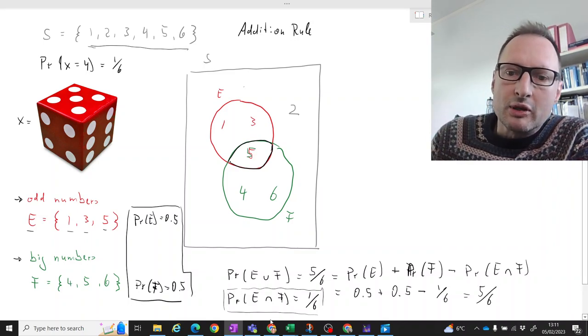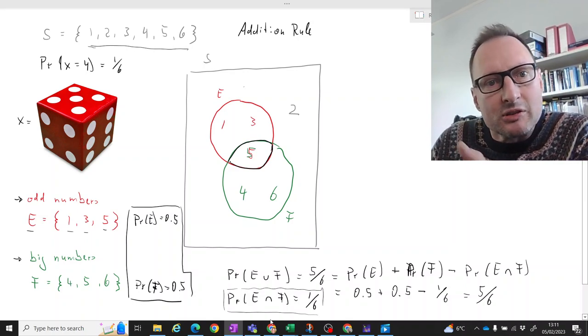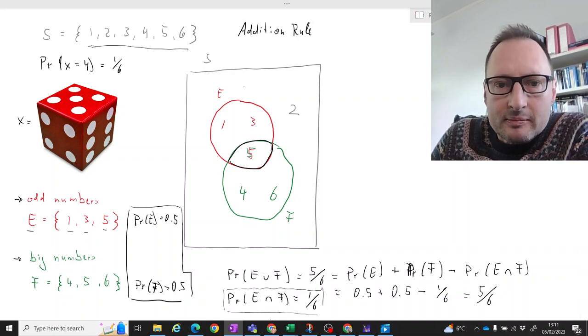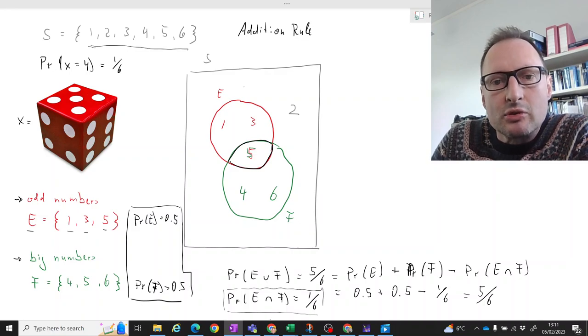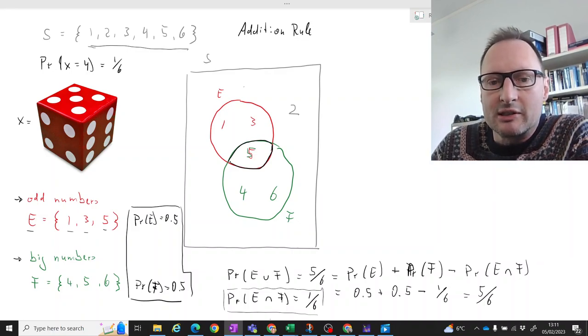So when you are adding probabilities, calculating probabilities of the union of events, what you have to make sure is that if there is an intersection, that you subtract the probability for that intersection.